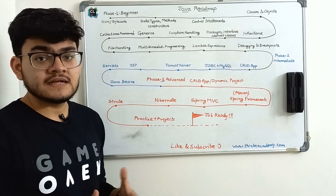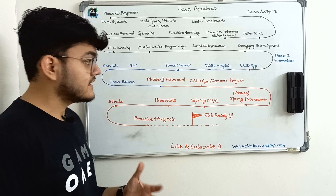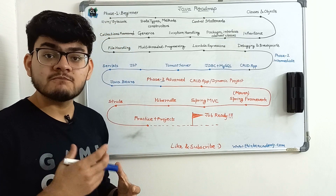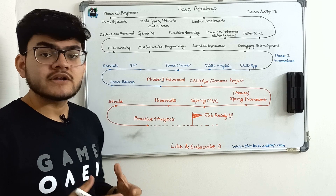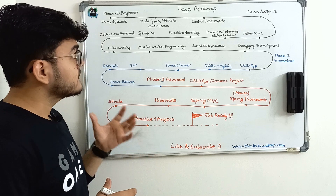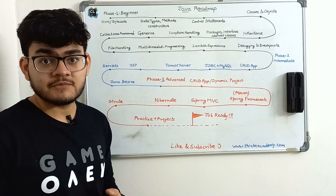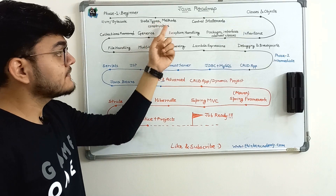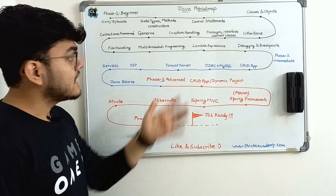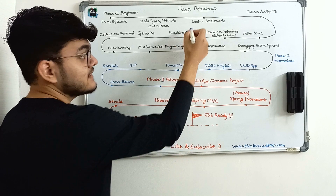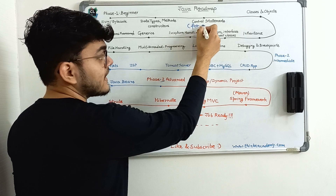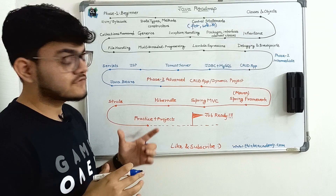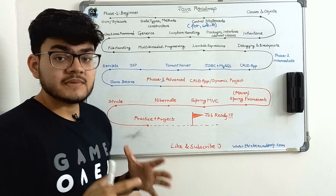So first of all, if you're completely new to Java programming and want to start your career right away, the first thing you will have to do is understand JVM bytecode and some of the important features of Java programming, like what is object-oriented programming and how you can actually compile and run a Java program. Then you will have to learn data types, methods, and constructors. After that comes control statements, which are basically for loops, while, do-while loops — all of that in this section. In the first phase, we are actually trying to get the basics right.